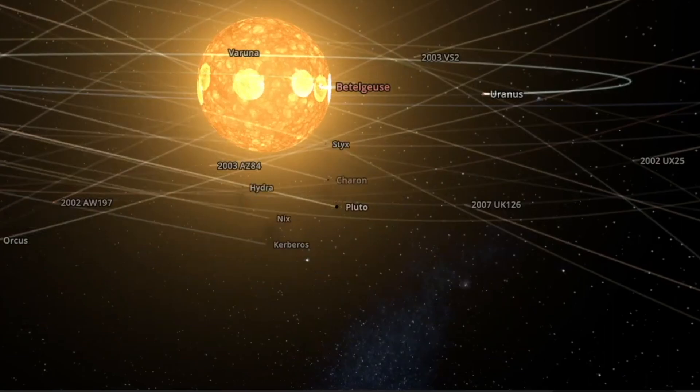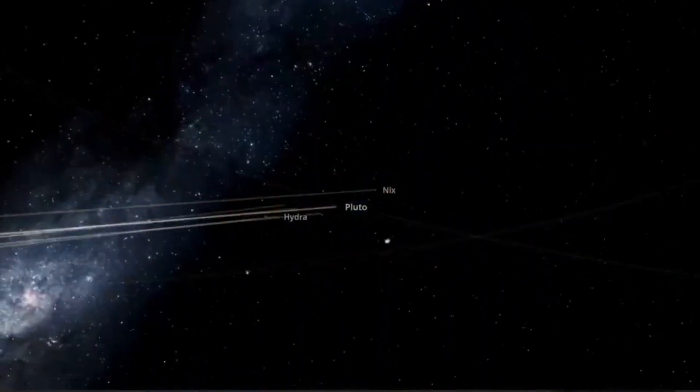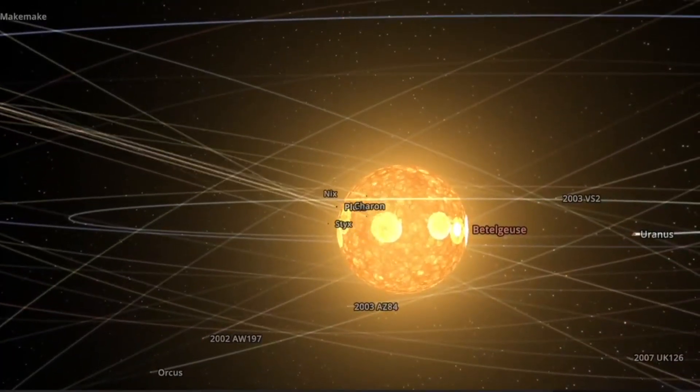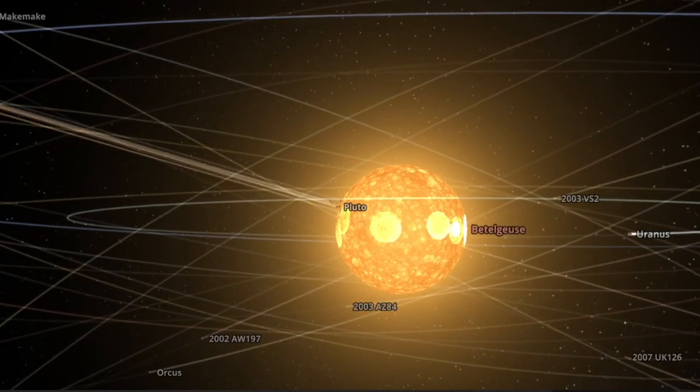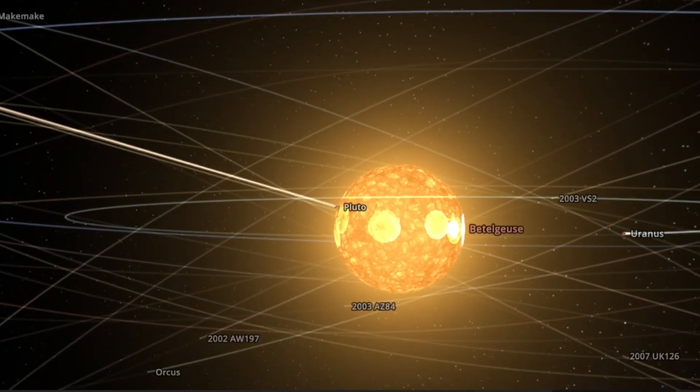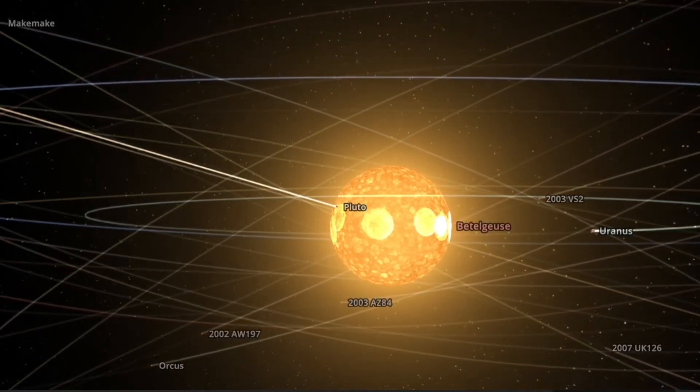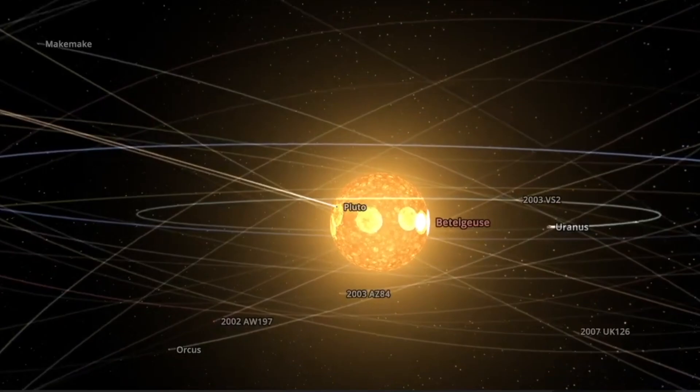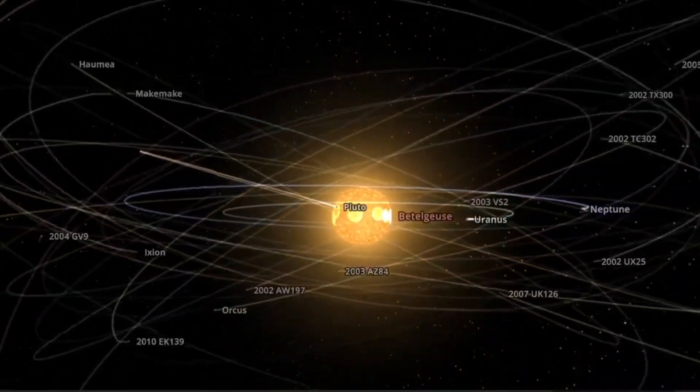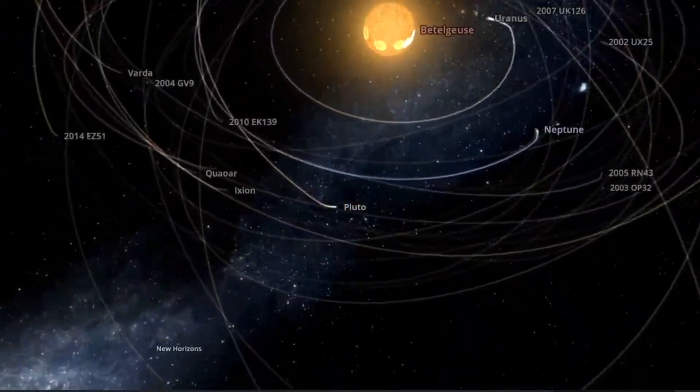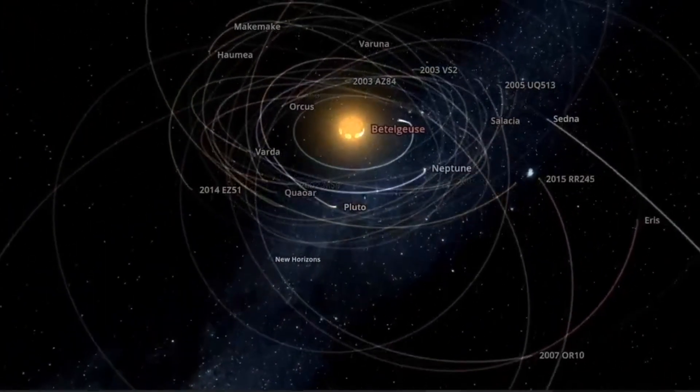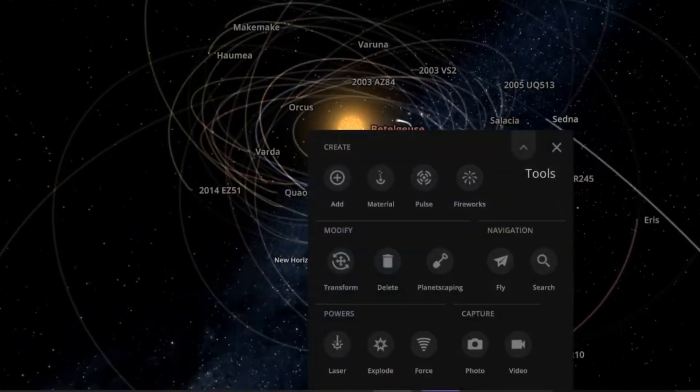Earth didn't even stand a chance. Earth immediately got destroyed as soon as I spawned in Betelgeuse on Earth, replacing our sun with Betelgeuse. That is pretty crazy. As we go farther out here, we're going to go to Voyager, if I can find Voyager here. But yeah, it's pretty cool.